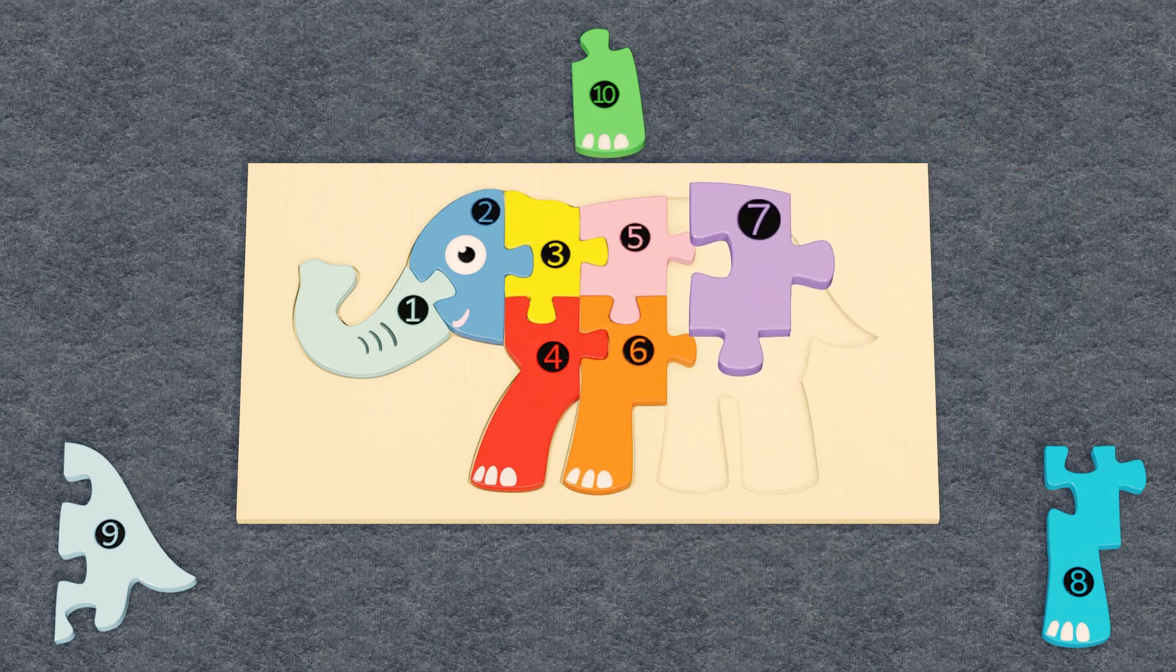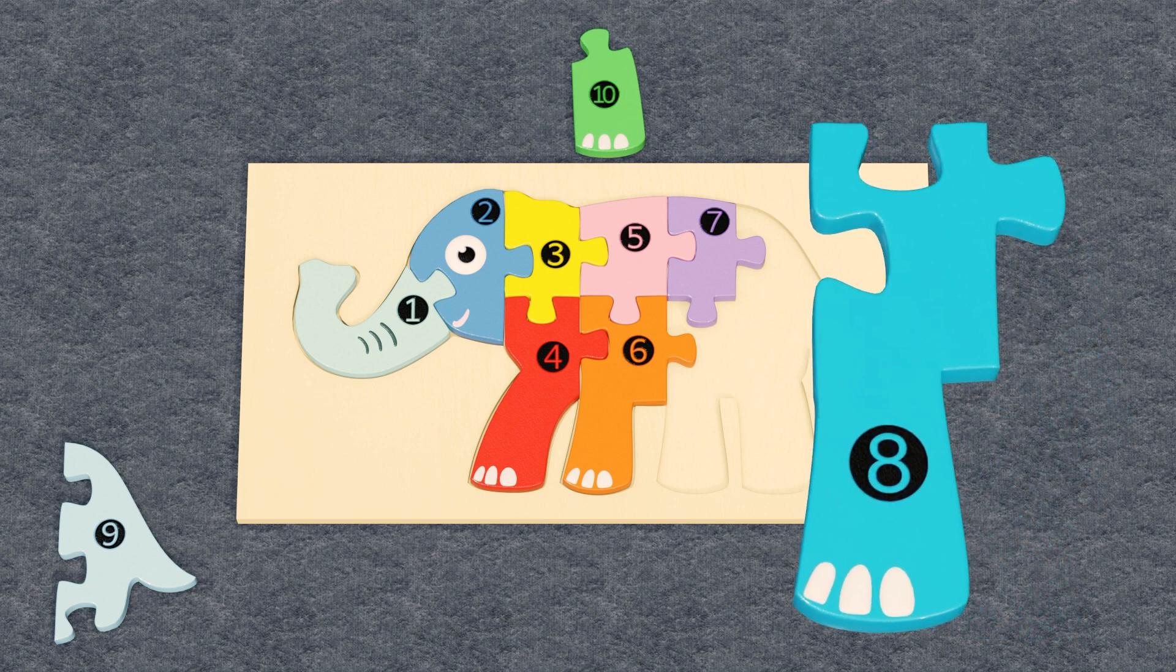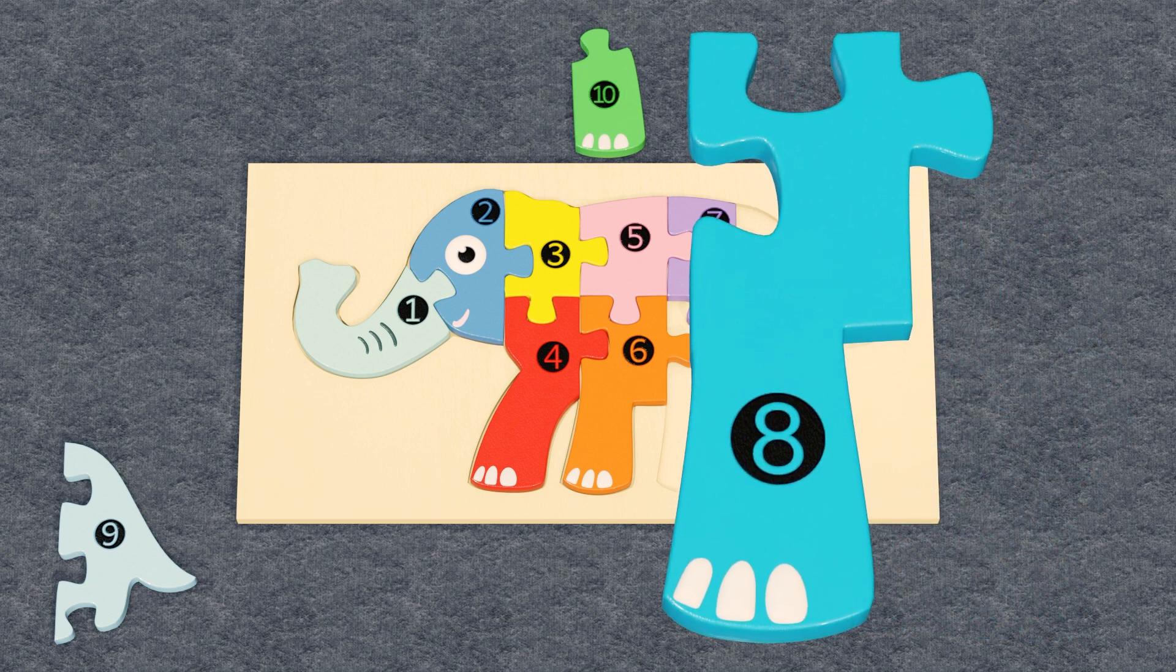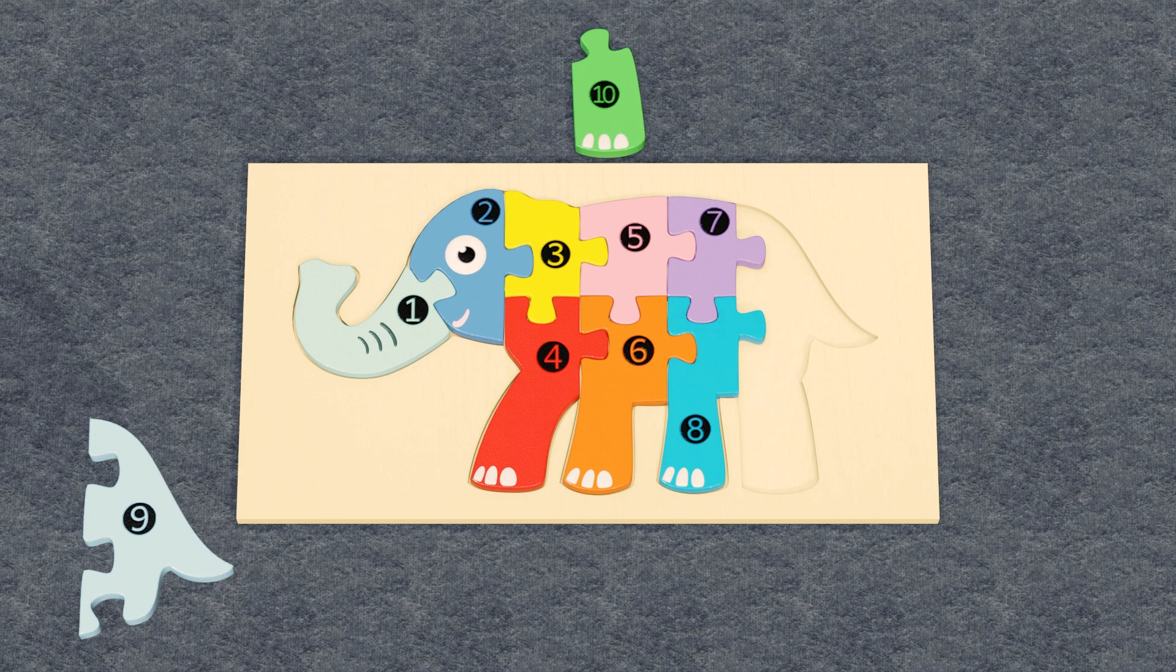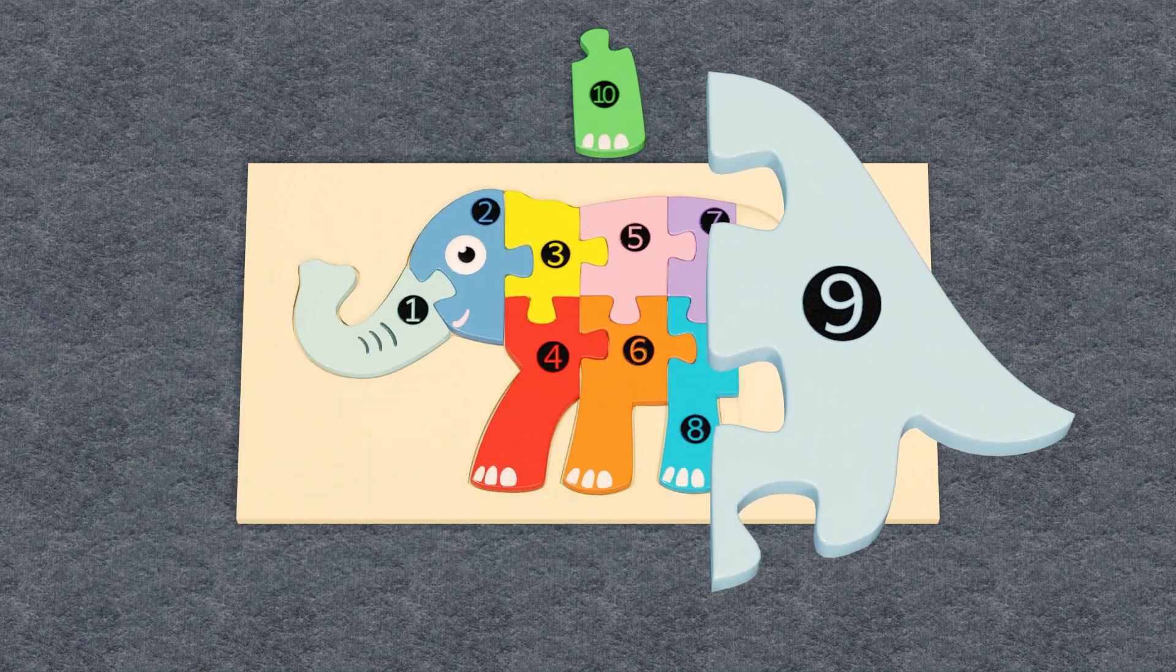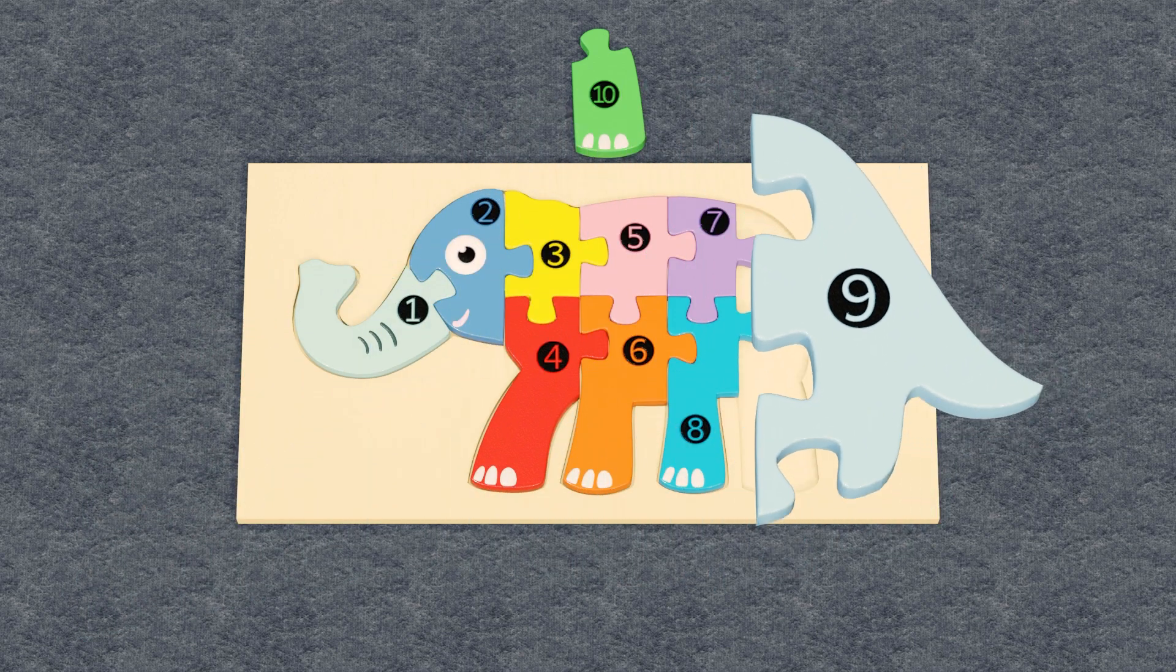Number seven matches to this place. Piece number eight is the back leg, and it fits here. Piece number nine is tail, so it matched to this place.